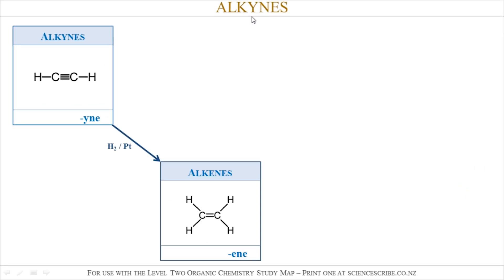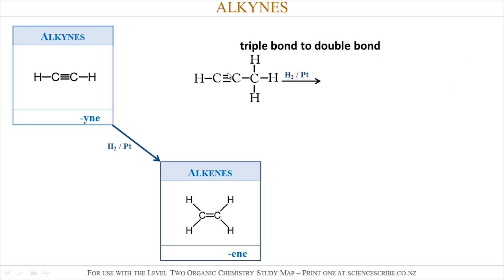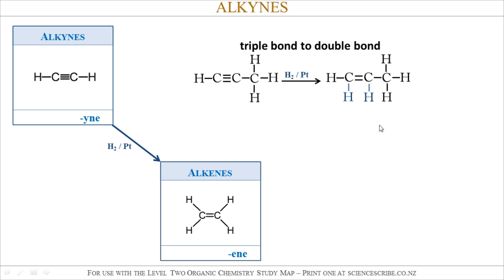As for reactions of alkynes, they undergo an addition reaction with hydrogen, and you can use a platinum catalyst to do that. All you do is take any alkyne and look specifically at the triple bond. All this reaction does is change triple bonds to double bonds and create two new single bonds. Remember: change the triple bond to a double bond, create two new single bonds, and put your hydrogens on.